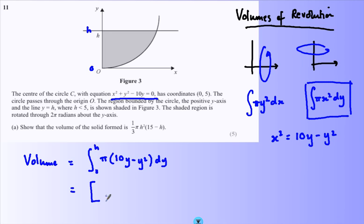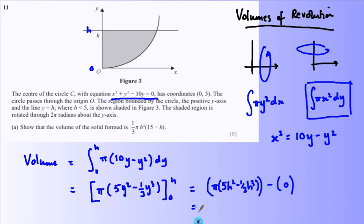This becomes π times 10y²/2 - y³/3, evaluated from 0 to h. If we put h into the formula, we get 5πh² - ⅓πh³. Let me sort that out properly - if I factorize ⅓πh² out, I've got what I need. So, volume of revolution: spin around the correct axes, choose the correct formula, integrate, and done.